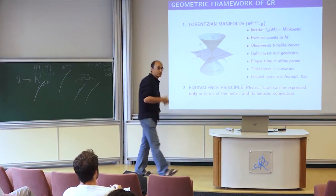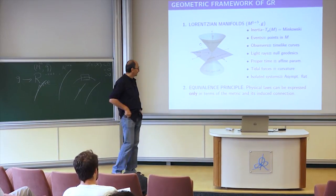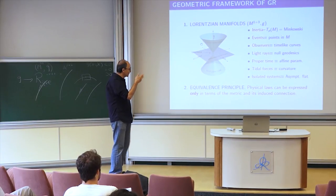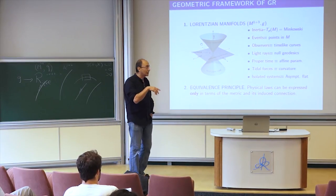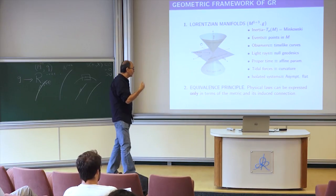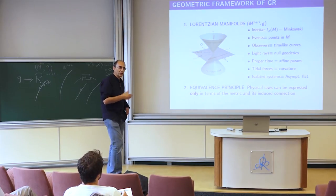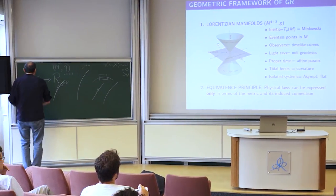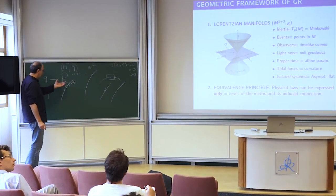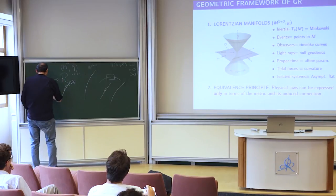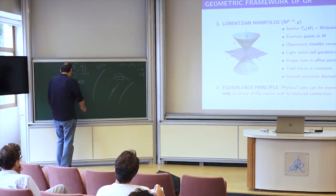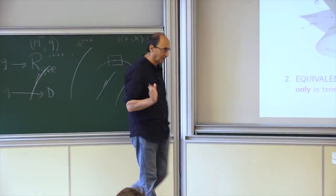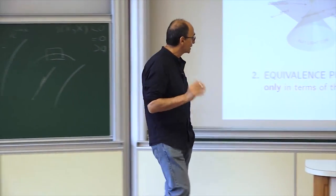The equivalence principle, which is at the heart of general relativity, is translated mathematically simply by saying that all physical laws can be expressed only in terms of the metric and its induced connection. If I have the metric G, in Lorentzian geometry exactly like in Riemannian geometry, you can associate the connection which is the so-called Levi-Civita connection, with exactly the same properties as in Riemannian geometry.